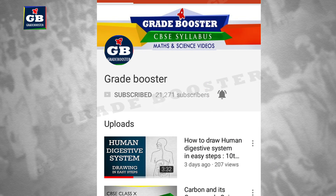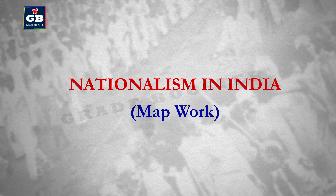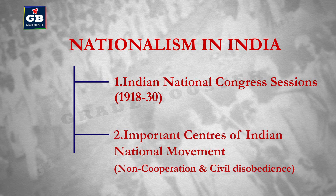In this unit we have two important topics for map work. One is Indian National Congress sessions between the period 1918 to 1930, and the second one is important centers of the Indian National movement. It includes the non-cooperation and civil disobedience movement. From these two topics, map work questions may be asked for locating, labeling, or identification.